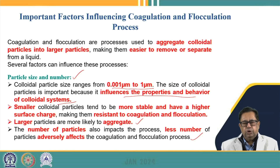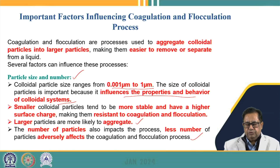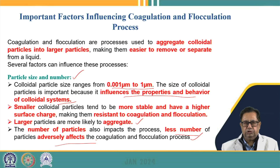The number of particles also affects the process. As particle number increases, the chances of coming closer to each other are higher and the process may be more efficient. If particle numbers are small, the chances of collision are low; even if destabilized, it will be very difficult to remove them by settling — they remain suspended in solution longer, adversely affecting coagulation and flocculation.